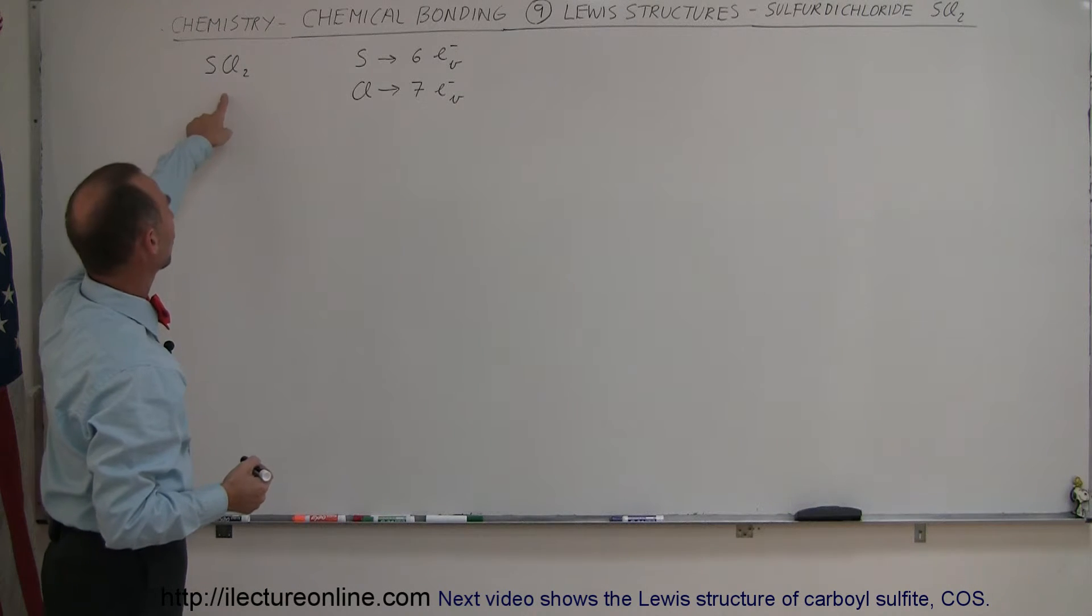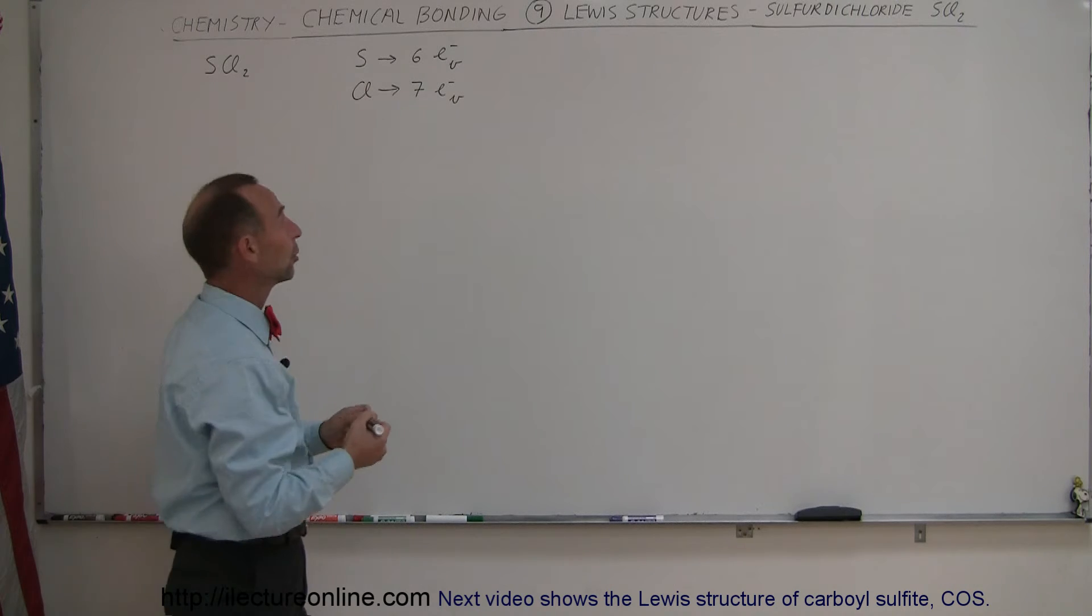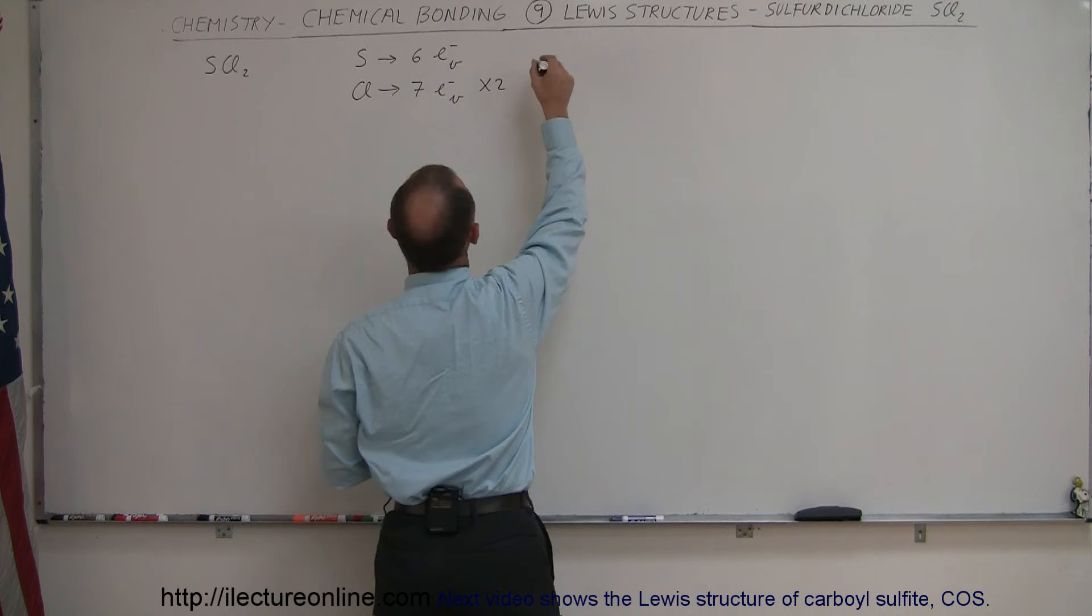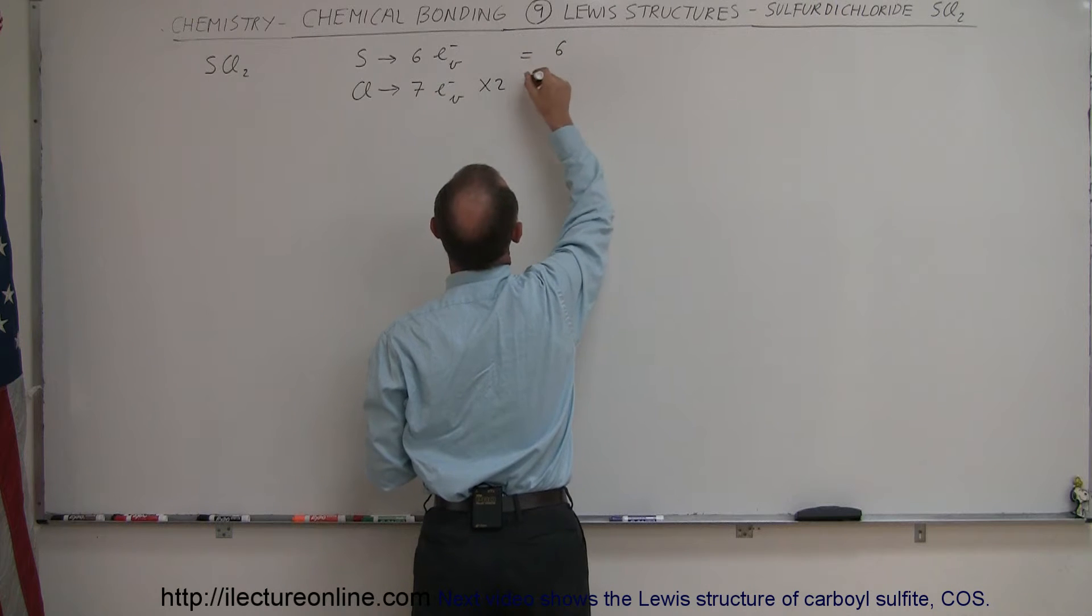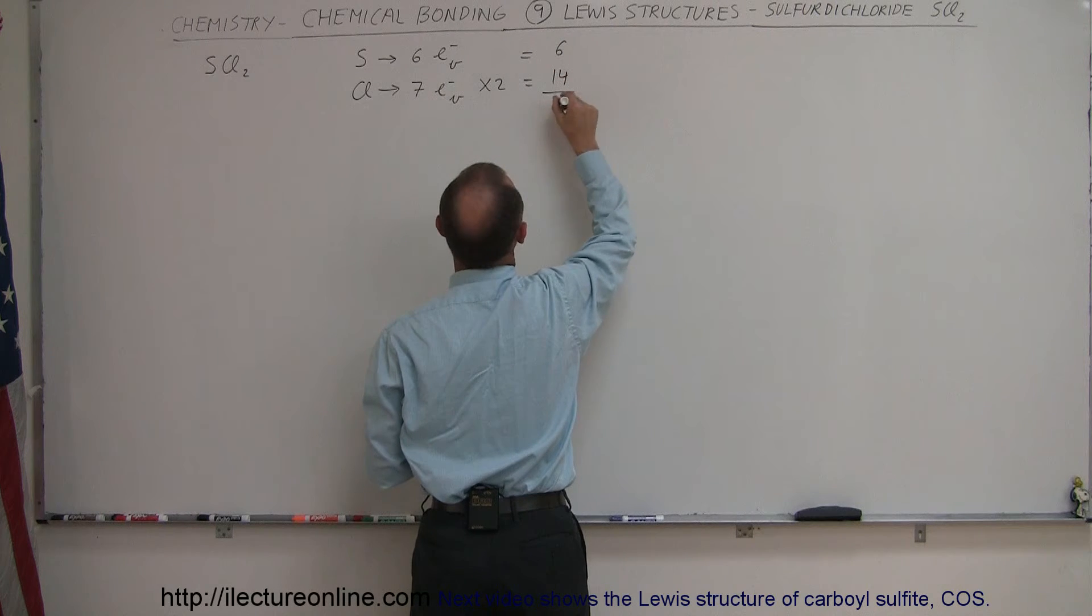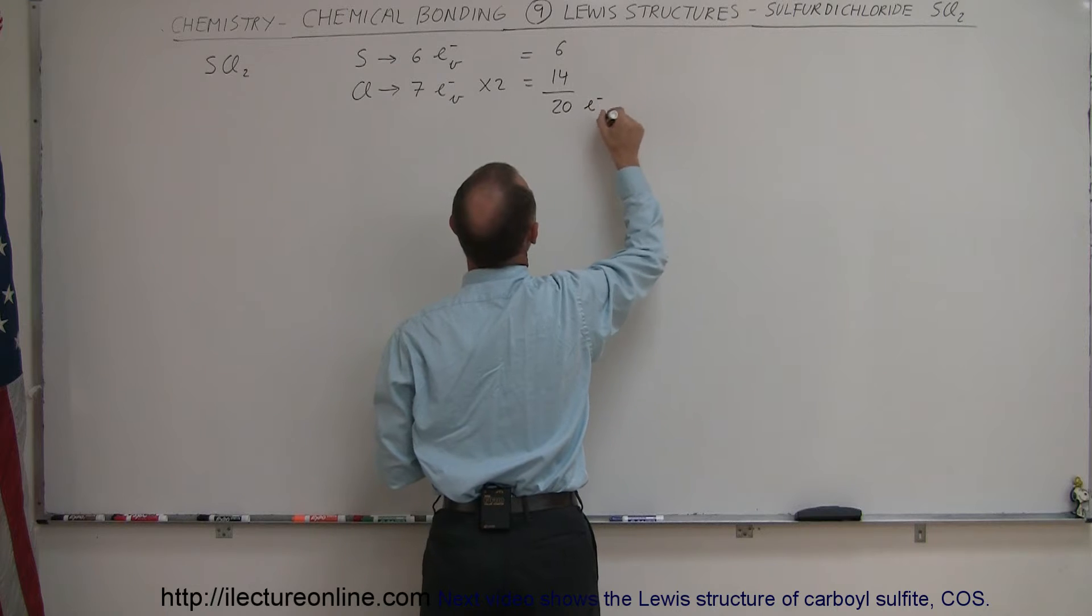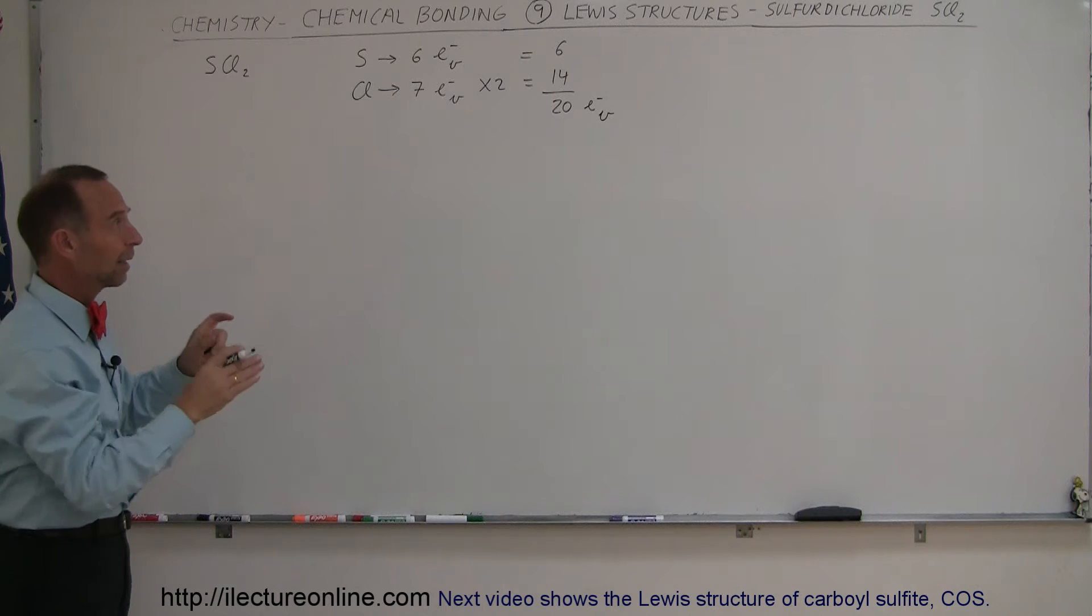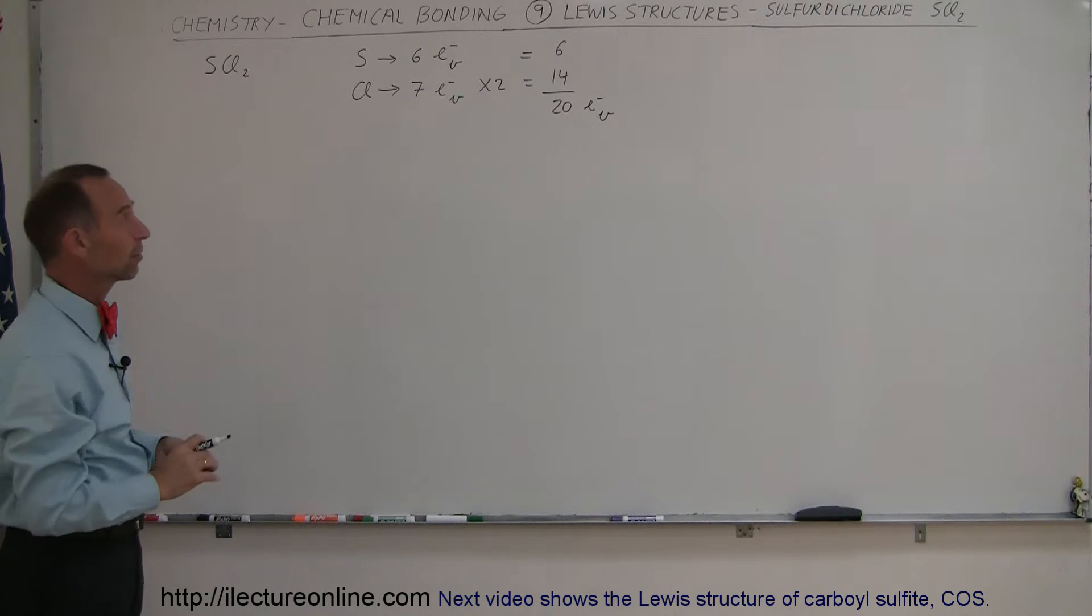Since there's two chlorines and one sulfur, let's add up the total number of valence electrons. So this is times 2, so this is equal to 6, this is equal to 14. When we add them together we have 20 valence electrons total, and when we're done putting the Lewis structure together we want to make sure that we still have 20 valence electrons.